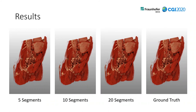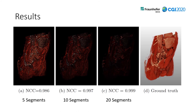Here you can see the Torso dataset rendered with different numbers of segments. Already five segments seem to be a good approximation and are visually quite close to the ground truth. To rigorously assess this, we rendered the Torso dataset with different numbers of segments and compared against the ground truth using a difference image and the NCC — normalized correlation coefficient. The NCC is very high, meaning we are very close to the ground truth. The difference images are multiplied by a factor of 10 just to make differences visible at all. Already for a low number of segments — for example 5 or 10 — the approximation is very very good.